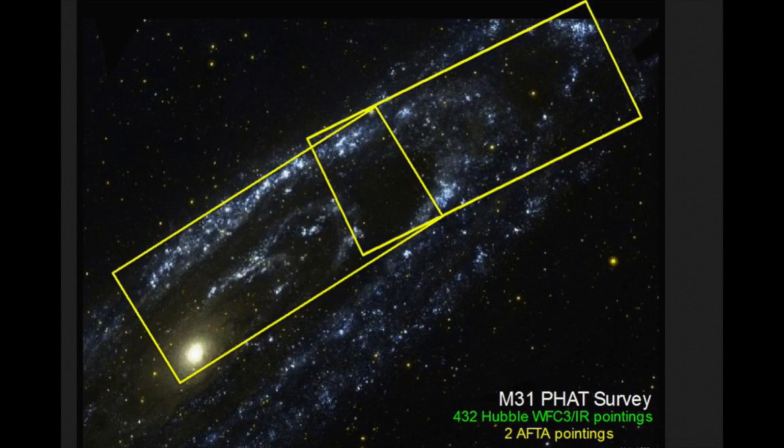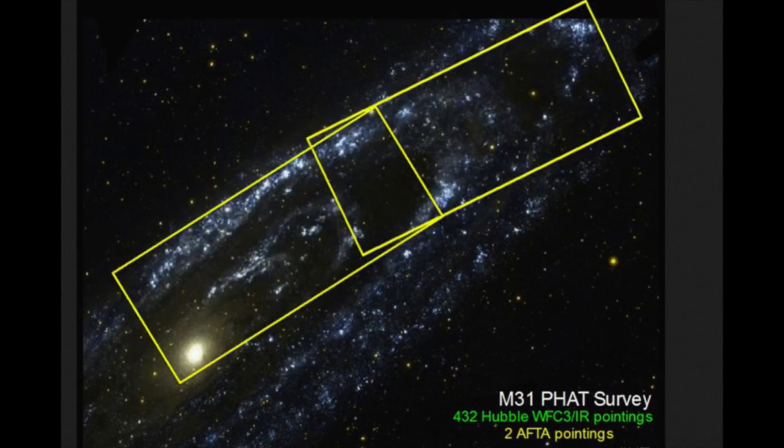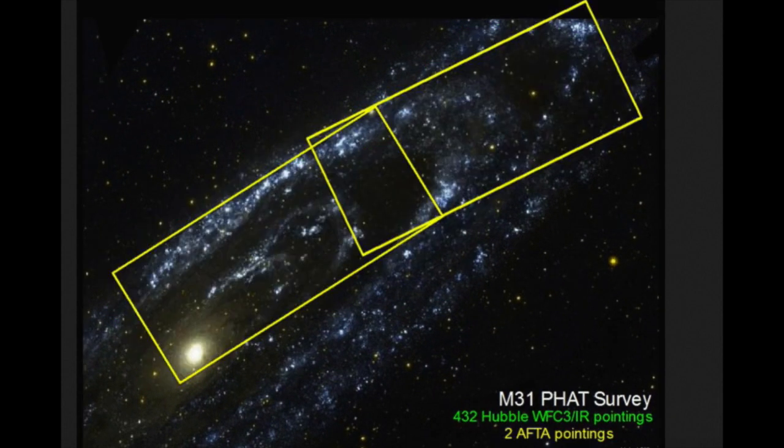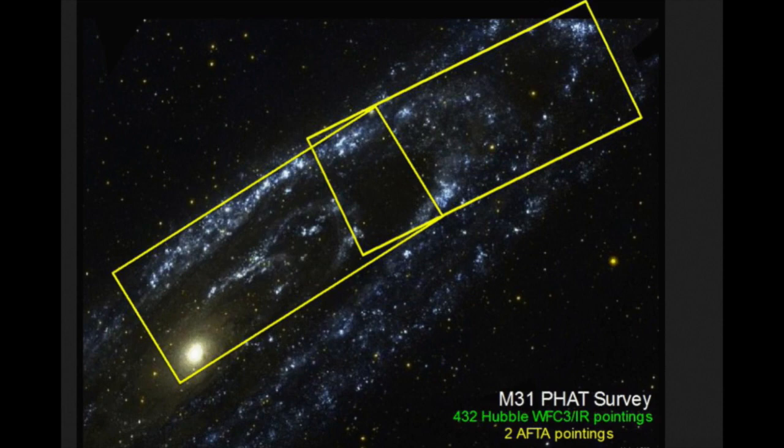So here's an example of what I'm talking about. This animated GIF shows just how many pointings of the Hubble Space Telescope it took to build this mosaic of a portion of the Andromeda Galaxy known as FAT. It took 432 pointings to cover this much of M31. But WFIRST can cover the same ground in just two pointings.